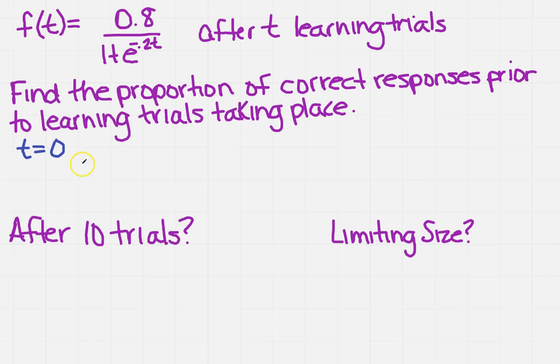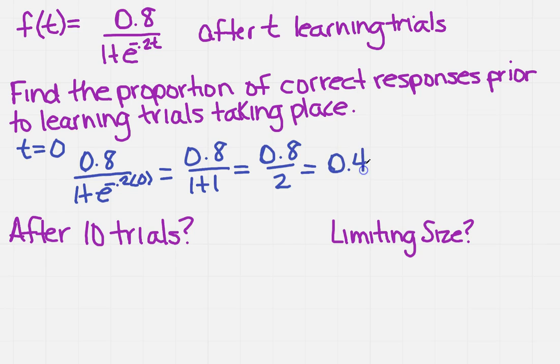So I'm just going to plug in 0.8 divided by 1 plus e to the minus 0.2 times 0. I'm going to get 0.8 over 1 plus anything to the 0 power is 1. So 0.8 divided by 2 is 0.4.